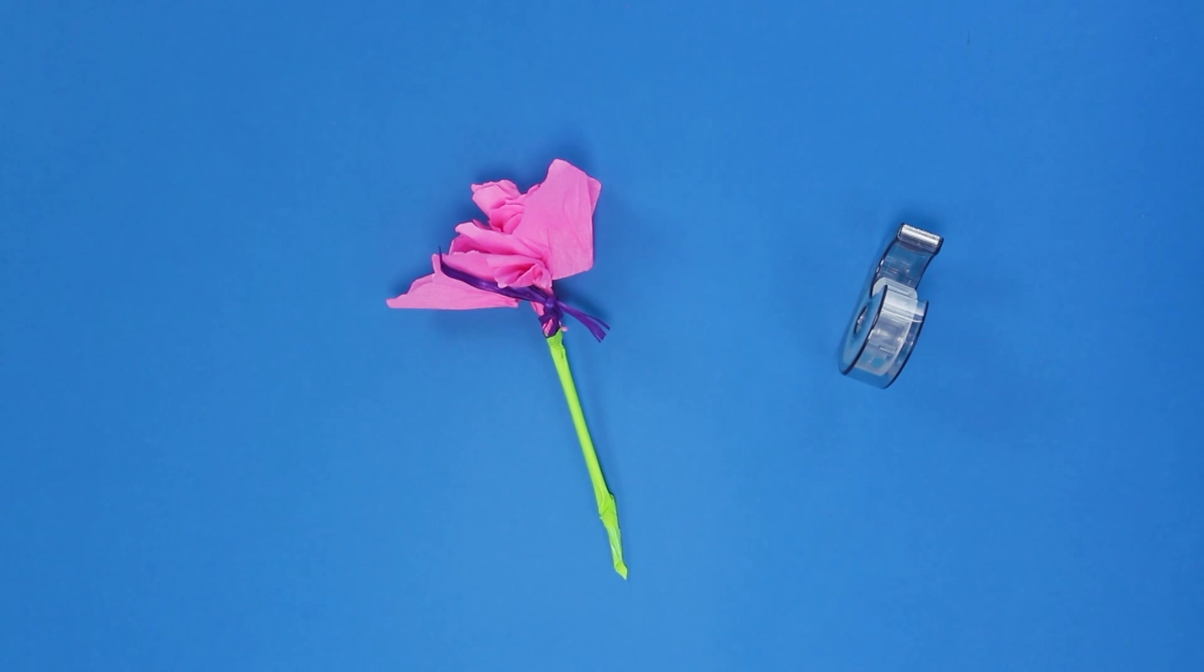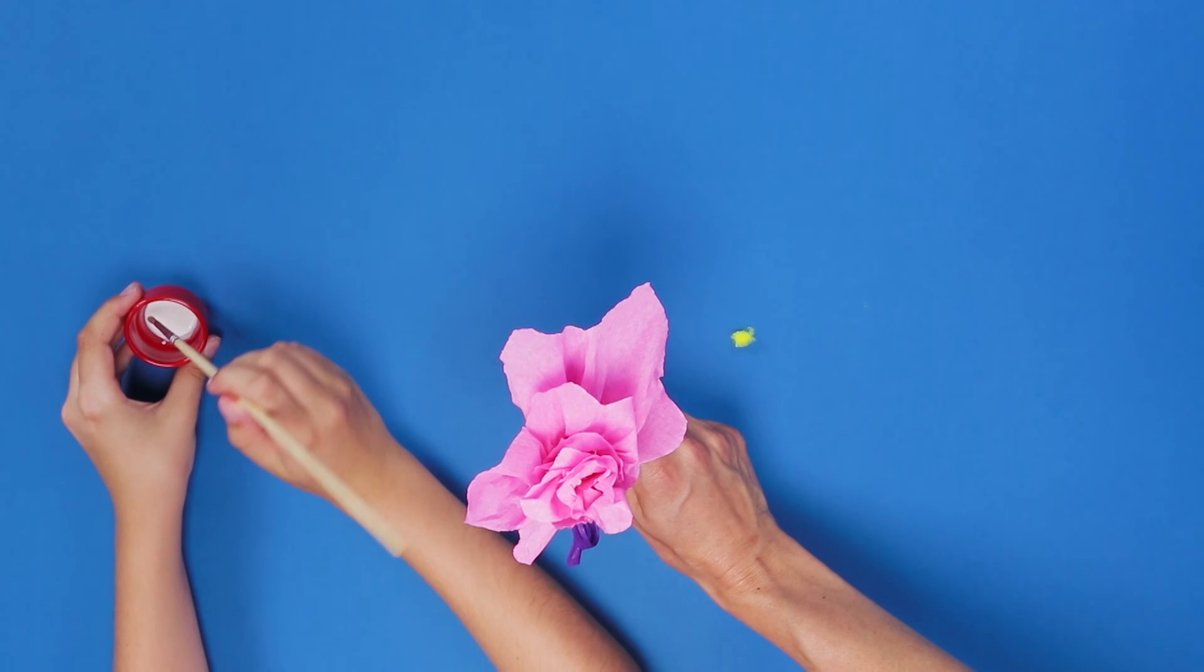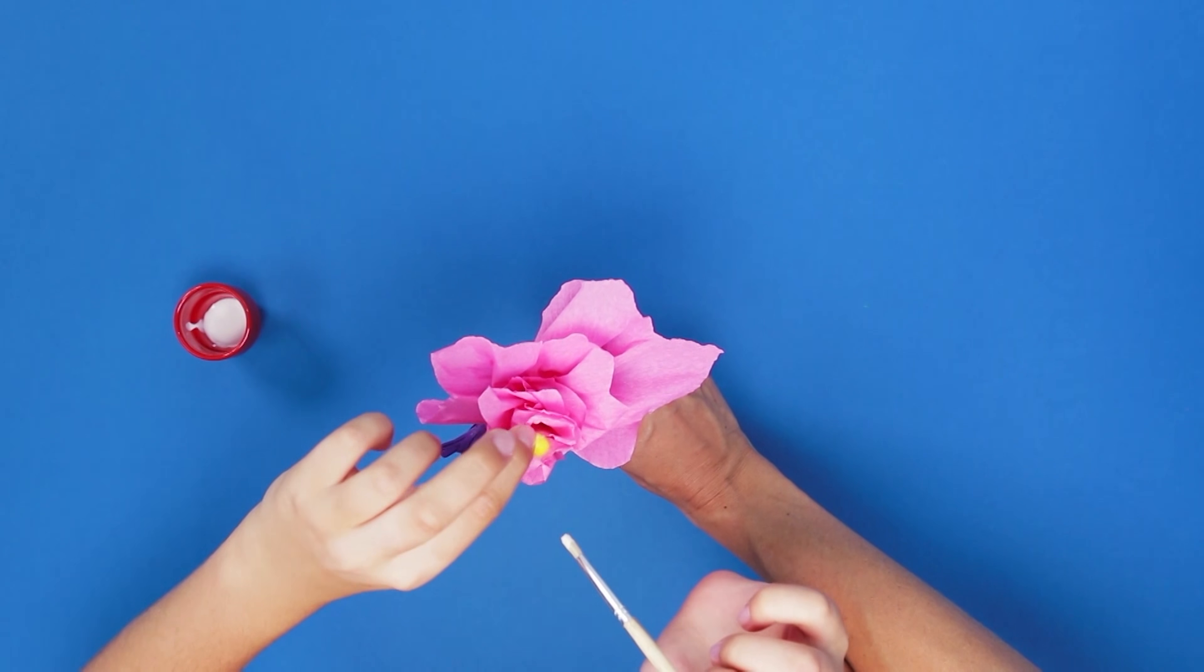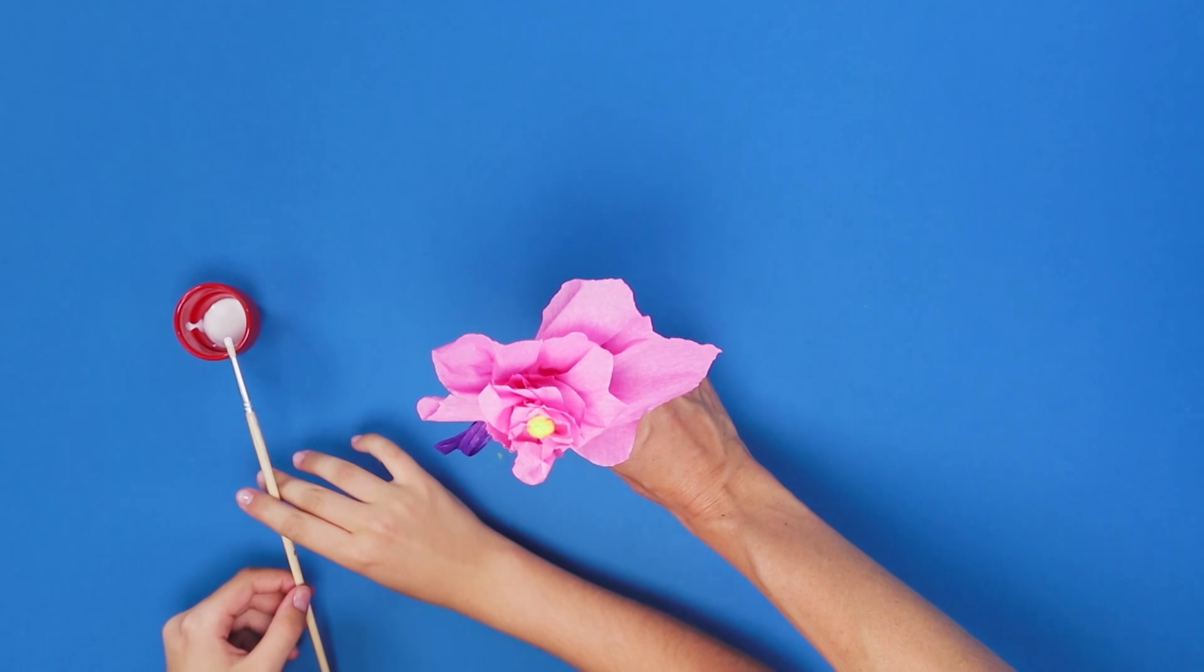Your flower is almost ready. Cut a piece of coloured pipe cleaner and then glue it to the middle of the petals. You just created the centre of your flower. So pretty.